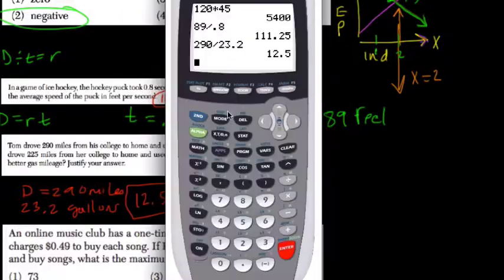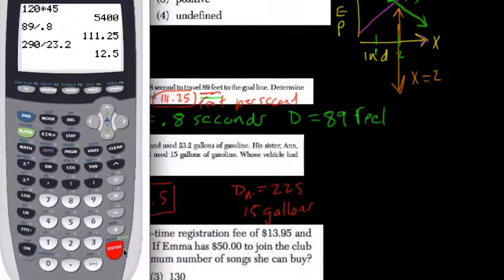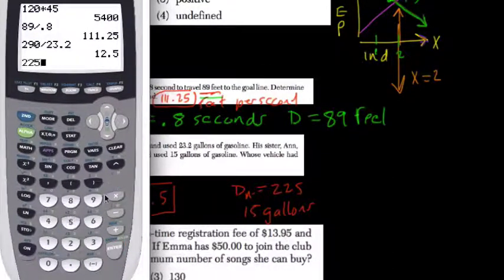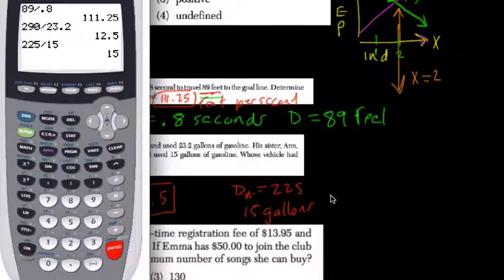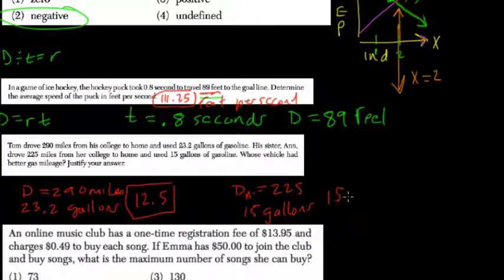Whereas Anne, 225 divided by 15, she used 15 gallons. She went 15 miles per gallon.